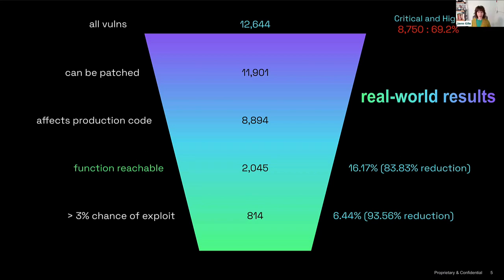Question: can you install and run Endor Labs behind a firewall? Yes, absolutely. We need egress to one subdomain, which is our API subdomain. All of the analysis happens on your end behind your firewall, and it's just results and cache metadata that gets sent to our cloud, all over HTTPS API calls.